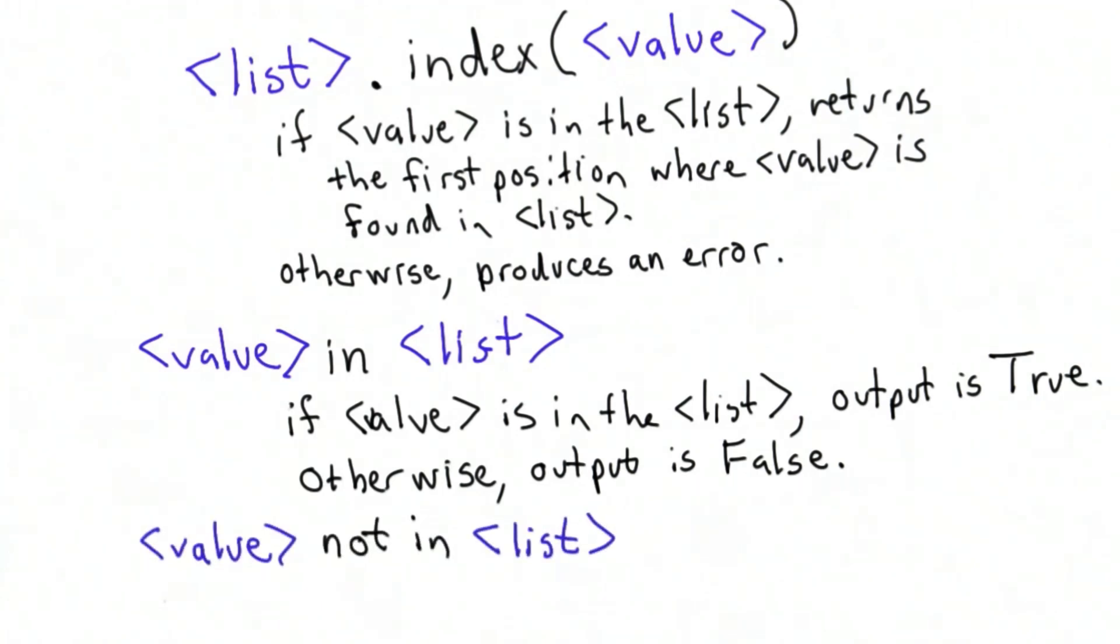Similarly, we can use not in. Not in has the opposite meaning of in. If the value is not in the list, the result of value not in list is true.